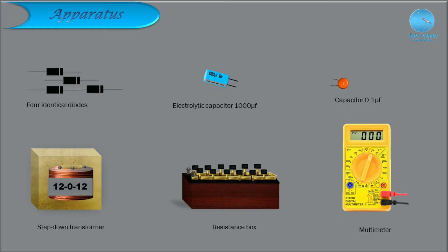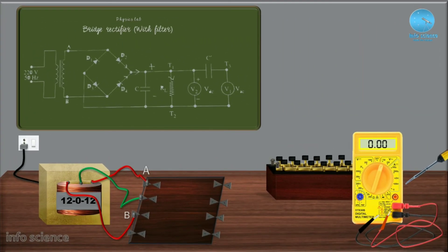We can move to the procedure. This is a filter circuit for the bridge rectifier. We have a transformer connected to the center tap on two terminals. We are going to keep it with the center tap.